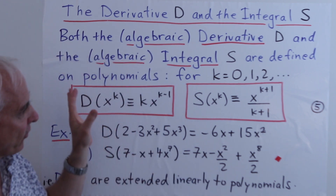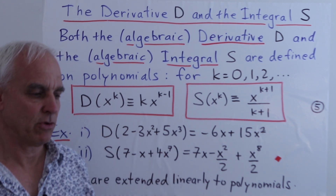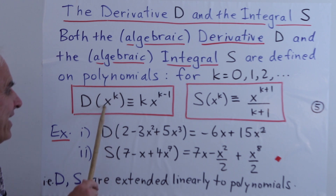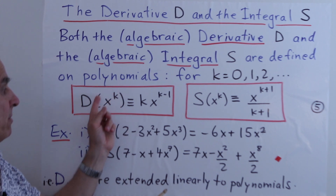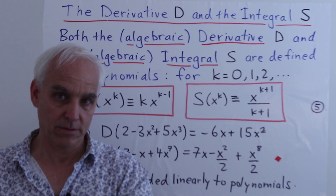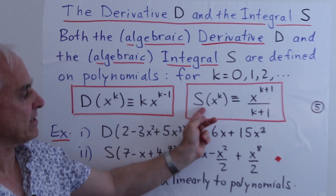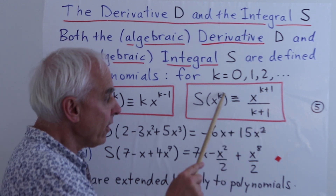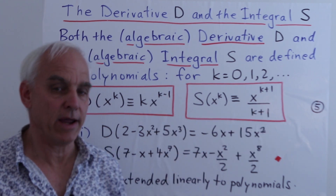Throughout, the polynomials are in a variable x. The derivative D of a monomial x^k is k times x^{k−1}: the exponent comes down as a coefficient and the new power is one less. The inverse operator S takes a monomial x^k and sends it to x^{k+1}/(k+1): the exponent is bumped up by one and we correspondingly divide by the new exponent.